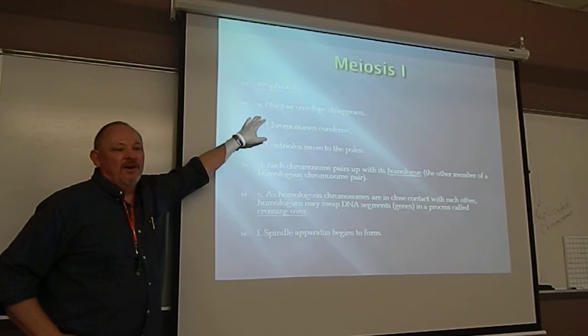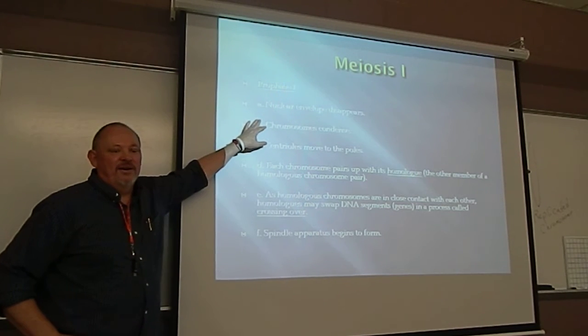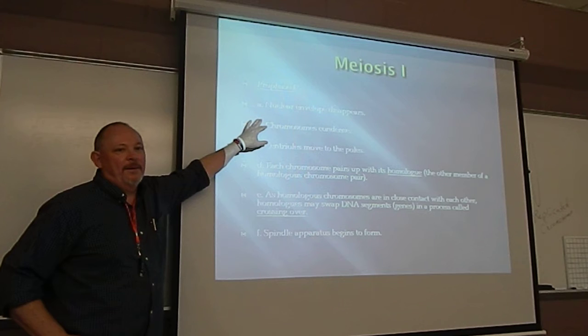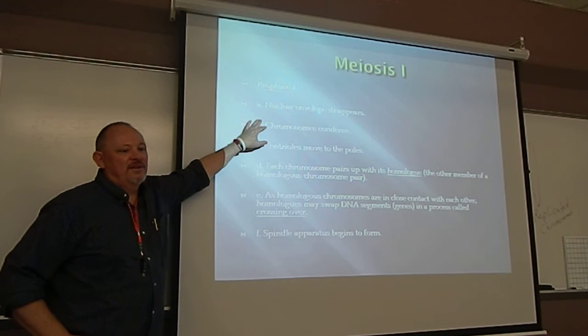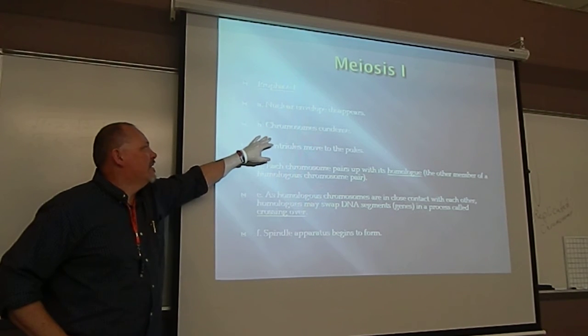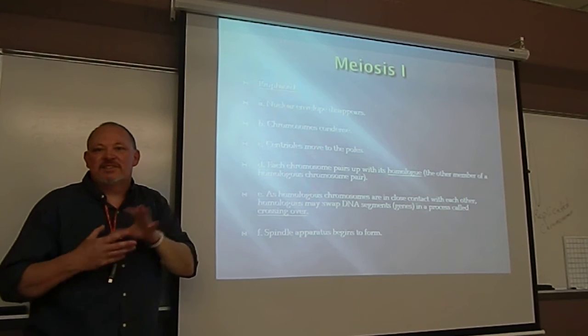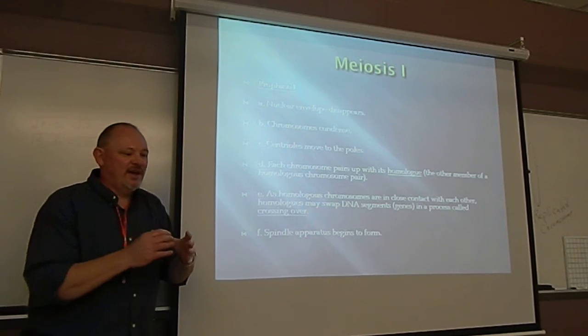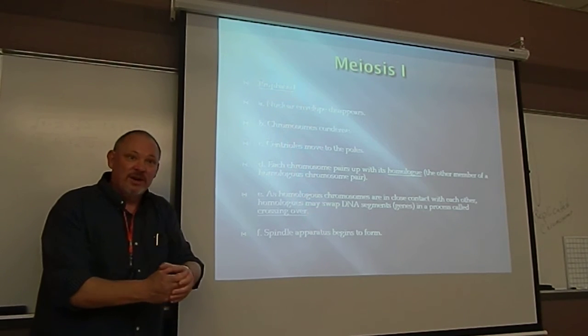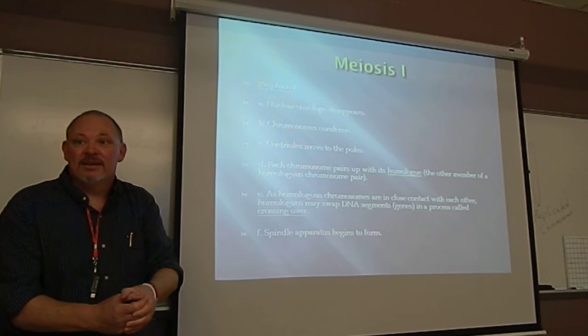The nuclear envelope starts to disappear in prophase I, just like in mitosis. The chromosomes condense. You can start seeing them if you look at a slide underneath the microscope. You can see them. They thicken up.